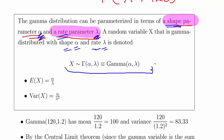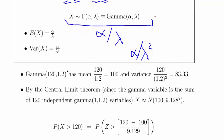The expected value is alpha over lambda and the variance is alpha over lambda squared. In this particular instance, the expected value is 100, which is 120 divided by 1.2, and the variance is 83.33, which is 120 divided by 1.2 squared.